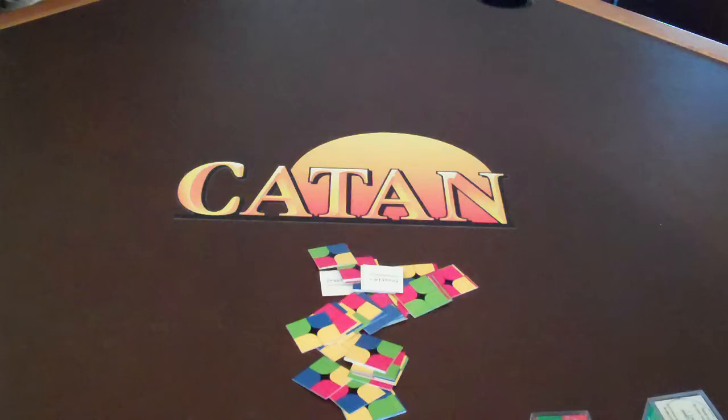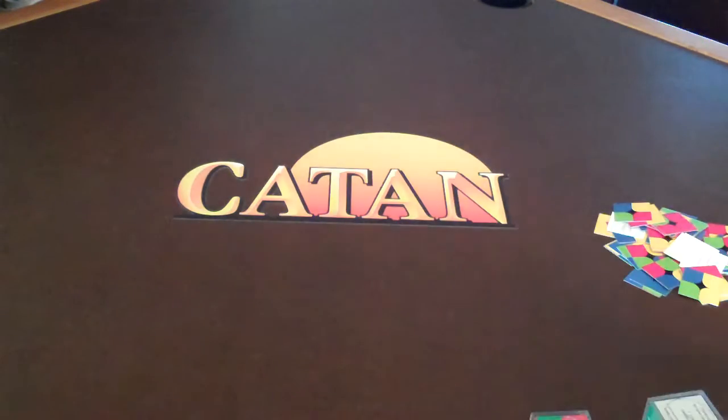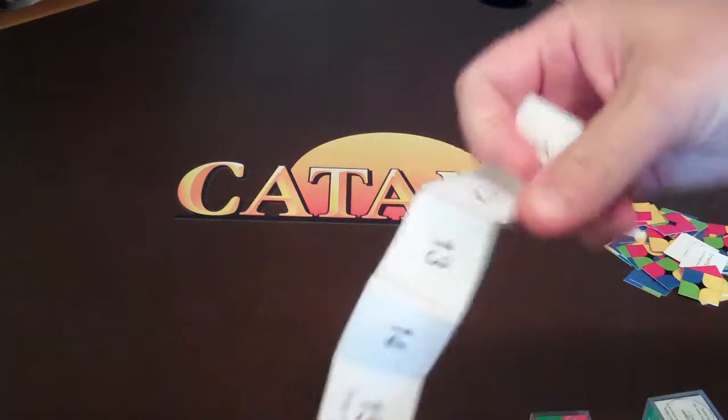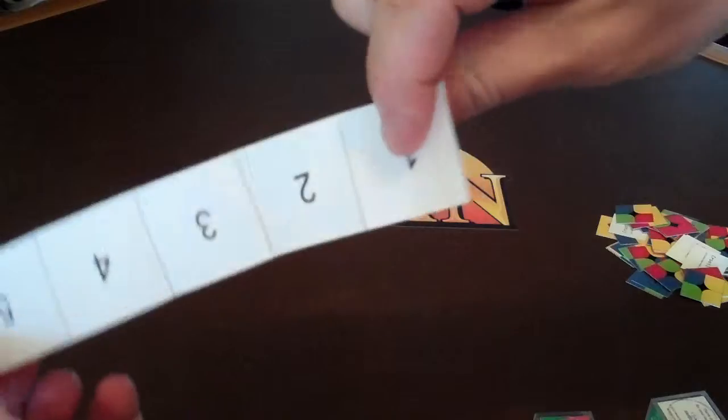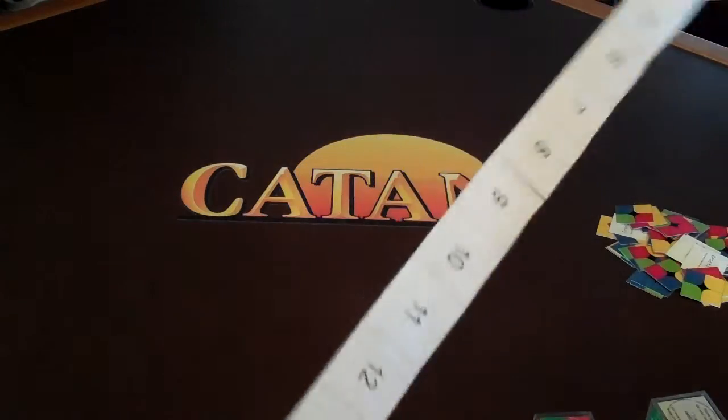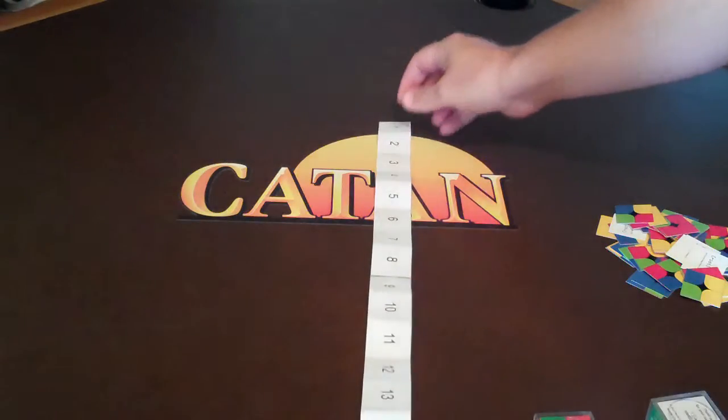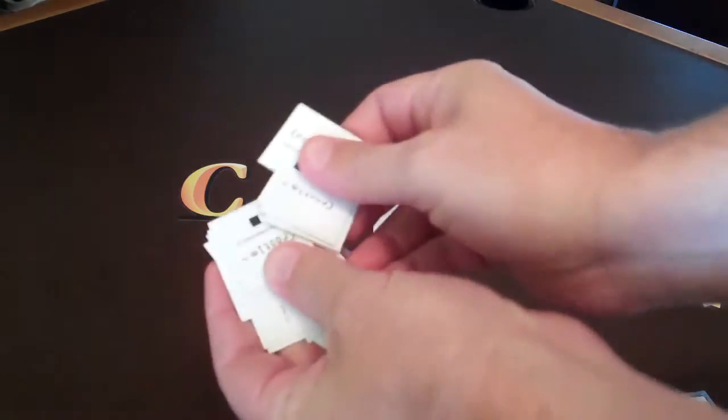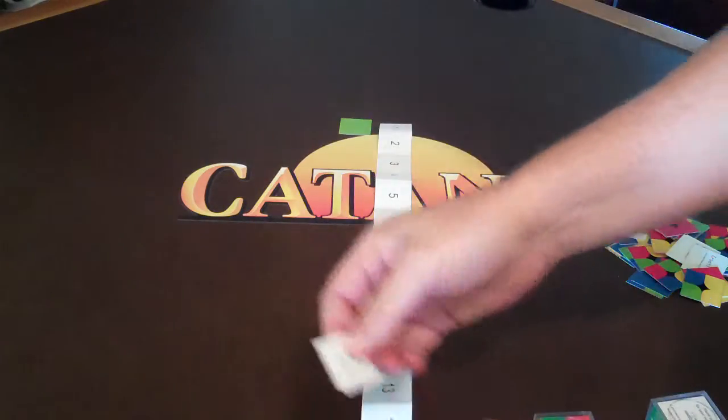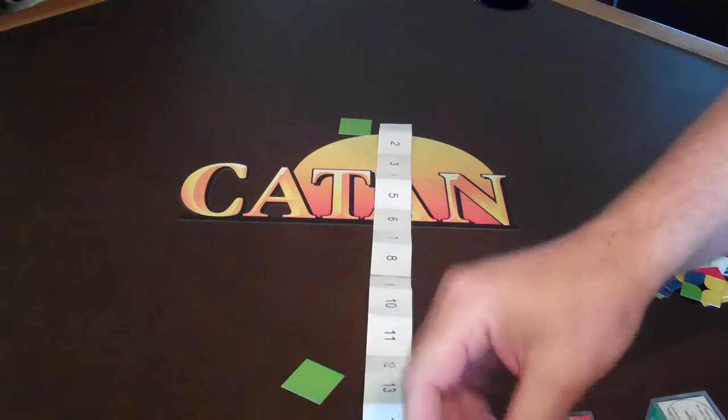So Crudel is played on a 16 by 16 playing field. It's a square. They include this small ruler - well, I say small - it's a 16 inch ruler. You use it to make up the playing field by randomly choosing solid colored tiles and making a 4 by 4 grid.